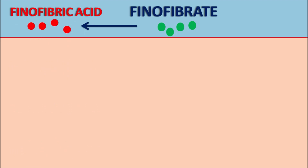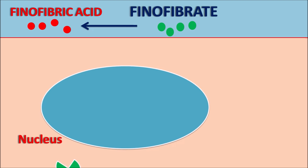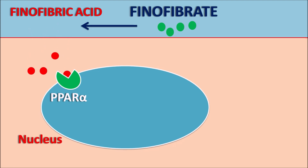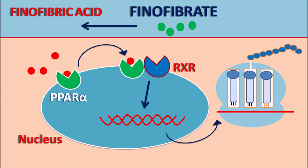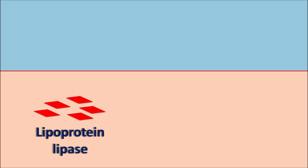When phenofibrate is administered into the body, it is hydrolyzed to phenofibric acid, the active metabolite. Phenofibric acid acts on the nucleus, where PPAR-alpha receptors — peroxisome proliferator activated receptors — are present on the nuclear membrane. Phenofibric acid enters the cell and binds to these PPAR-alpha receptors. When these receptors are activated, they undergo dimerization with retinoid receptors. This complex undergoes autophosphorylation and interacts with DNA to produce gene transcription, resulting in the synthesis of proteins including lipoprotein lipase.